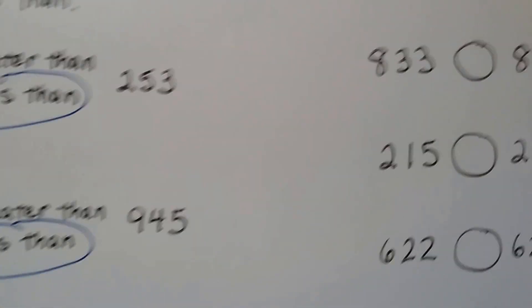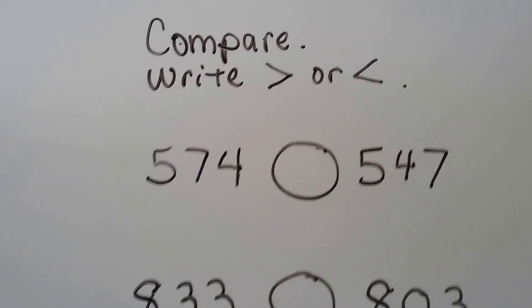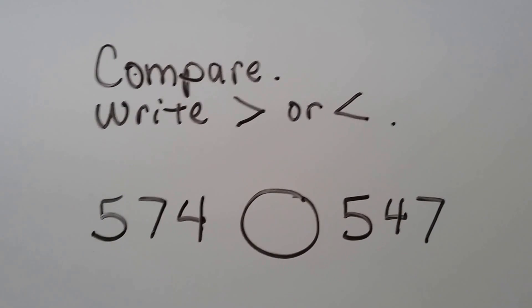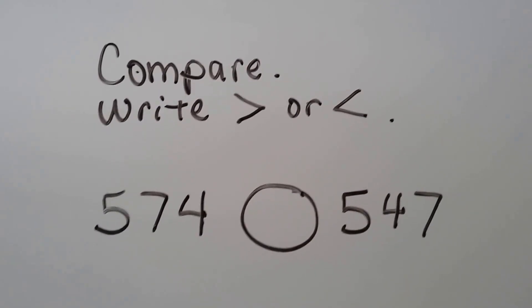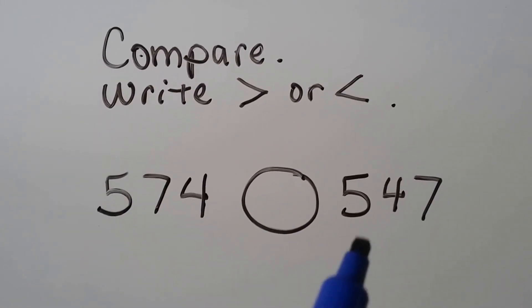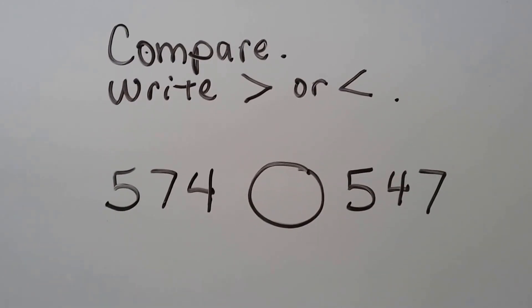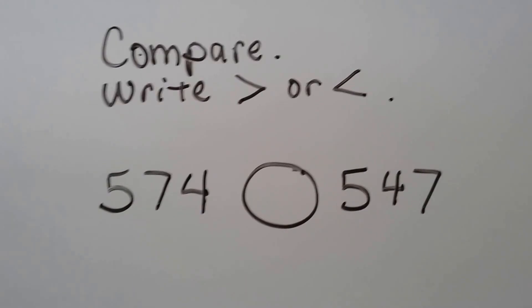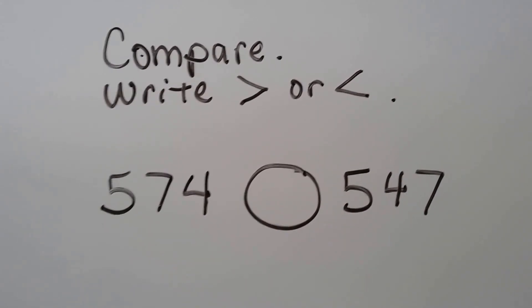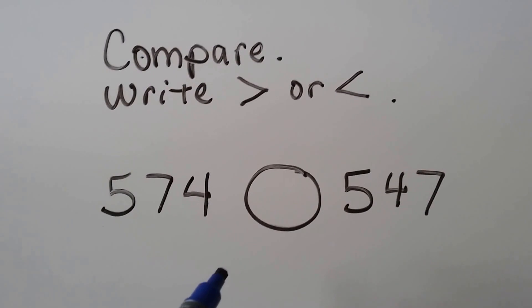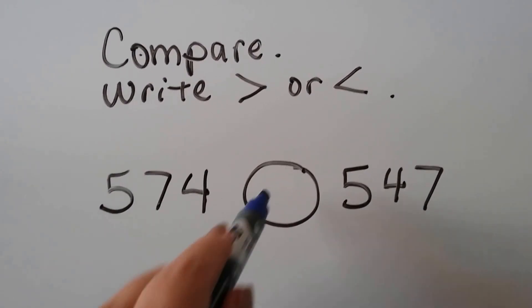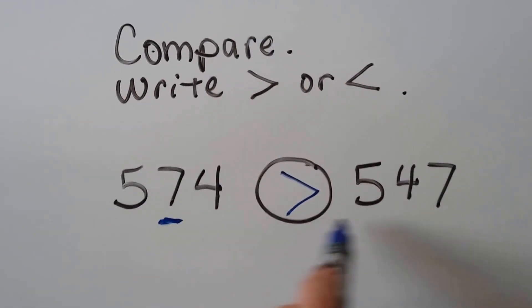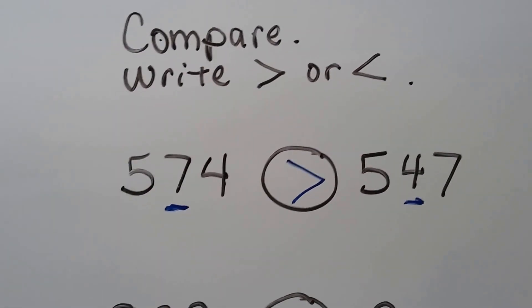Let's write greater than or less than for these numbers. We'll compare the hundreds, then the tens, then the ones if we have to. 574 or 547 — which sign goes in here? Which number is greater? The sign has its open mouth facing the greater number. It's greater than, because 574 has seven tens and 547 has only four tens.